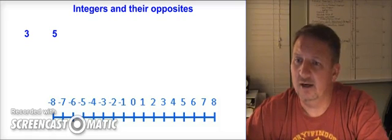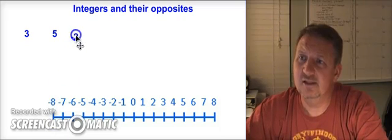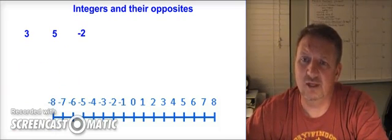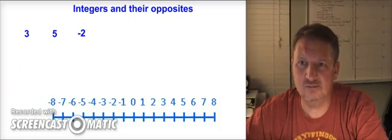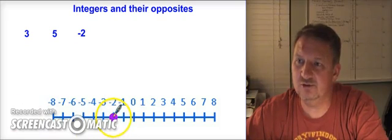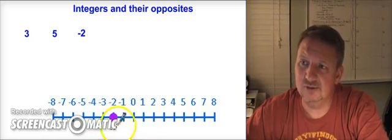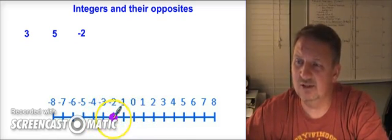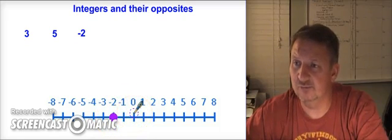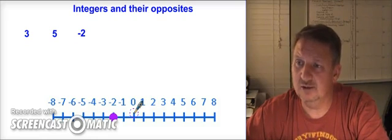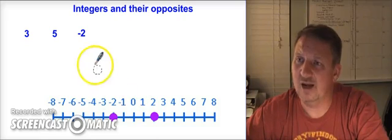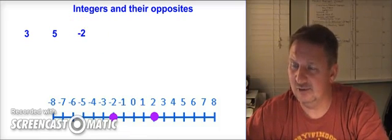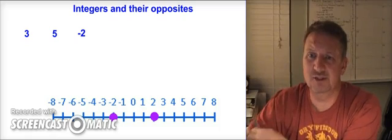The next example is negative two. If we look at negative two on the number line, it is to the left of zero, so its opposite should be to the right. It is two places from zero, so we go to the right two places: one, two. The opposite of negative two is positive two.